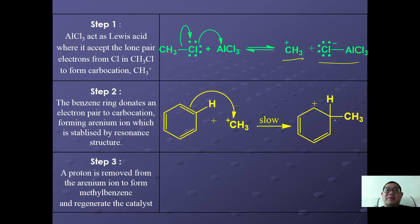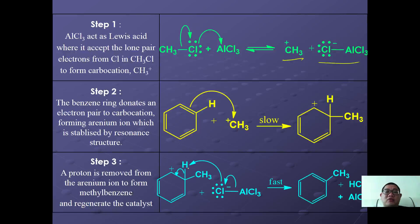Finally, the AlCl4− complex deprotonates the intermediate. The pi bond reforms and heterolytic fission of AlCl4− simultaneously takes place, yielding the desired product methylbenzene plus HCl plus AlCl3, which is regenerated as catalyst.